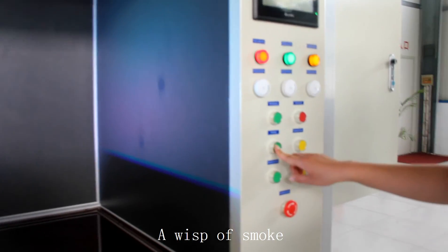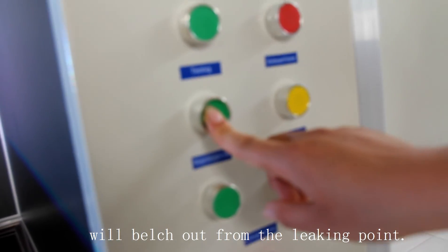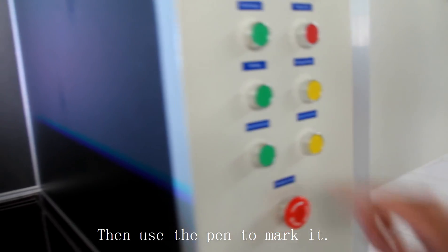If there is a leaking point in the filter, a wisp of smoke will emerge from the leaking point. Then use a pen to mark it.